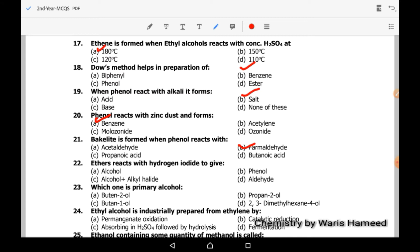Ethers react with hydrogen iodide to give alcohols and alkyl halide. Which one is primary alcohol? Butane-1-ol is primary alcohol. Ethyl alcohol is industrially prepared from ethylene by absorbing in sulfuric acid followed by hydrolysis.